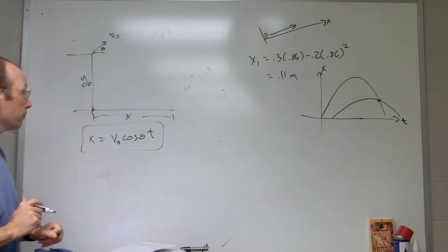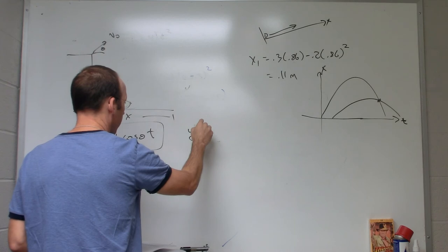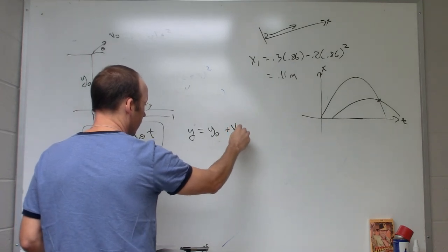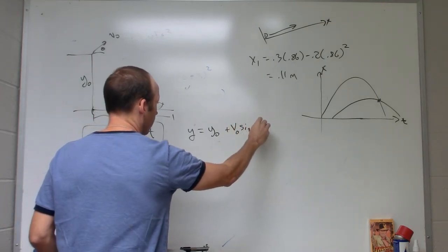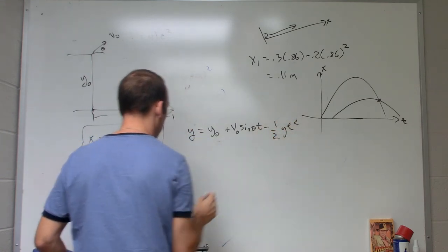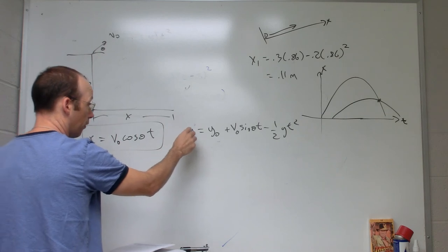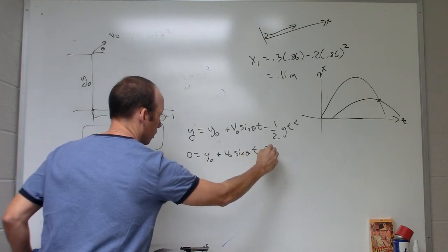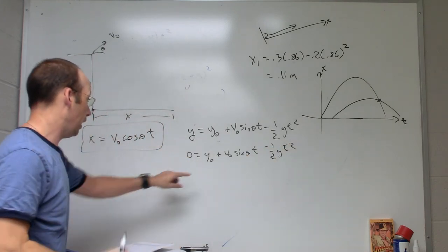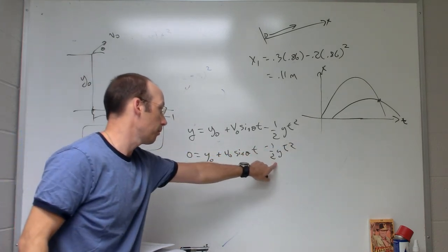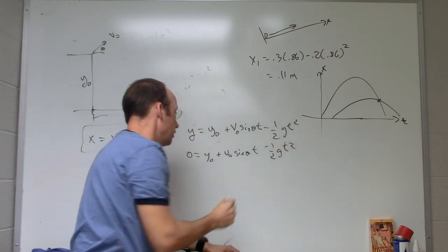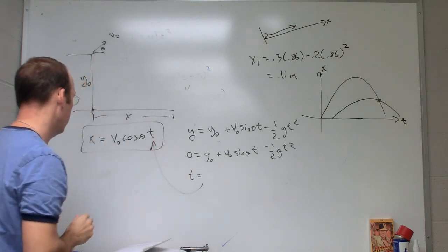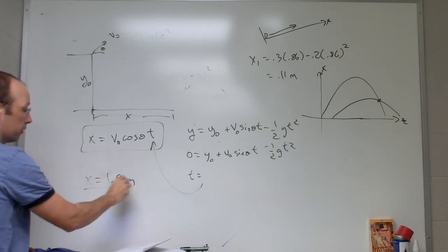For the y equation, I have y equals the final y equals y zero plus the initial y velocity, v0 sine theta t, minus one-half g t squared. Now in this case, I know it ends up at the ground, so this is zero. So now I know that number, I know that number, I know that number—that's a t. So I just have the quadratic. I can just use a quadratic equation to solve for time, and then I can get that time and plug into here. And when you do that, you get x is about 1.9 meters. And that's it.